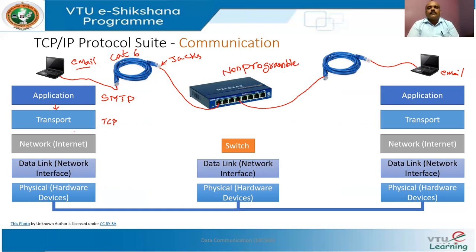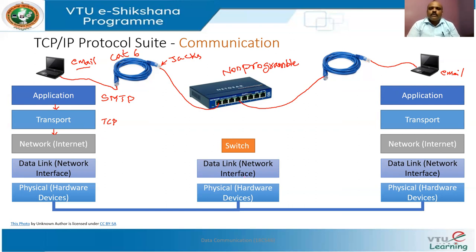The transport layer's job is to send the message generated by the SMTP protocol to the other user. It deals with services like connectionless or connection-oriented communication — here we run a TCP protocol. Then it goes to the network layer, whose job is to properly transfer the data to the destination. In this switch-based example, there's no intermediate routing, so it passes data along. The protocol running here is the IP protocol, which takes care of forwarding data to the correct IP address.